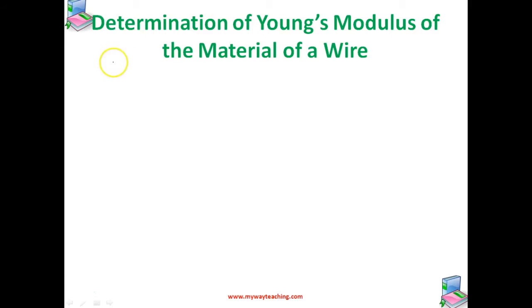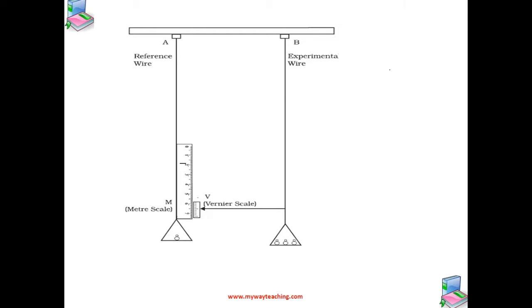Now let us learn the determination of Young's modulus of the material of a wire. A typical experimental arrangement to determine the Young's modulus of the material of a wire under tension is shown in this figure. It consists of two long straight wires of the same length and equal radius, suspended side by side from a fixed rigid support.